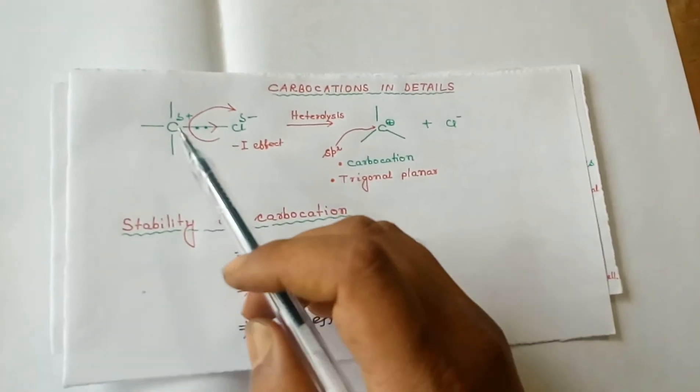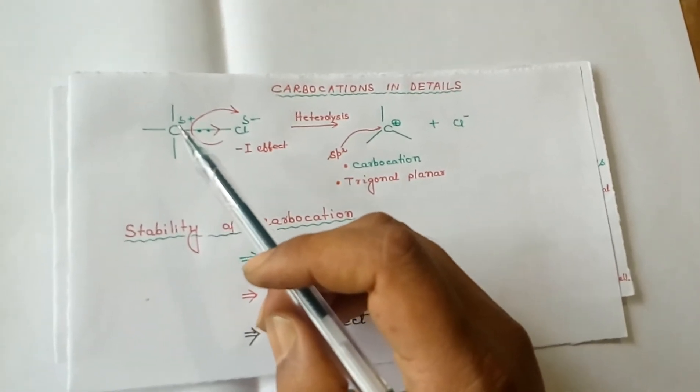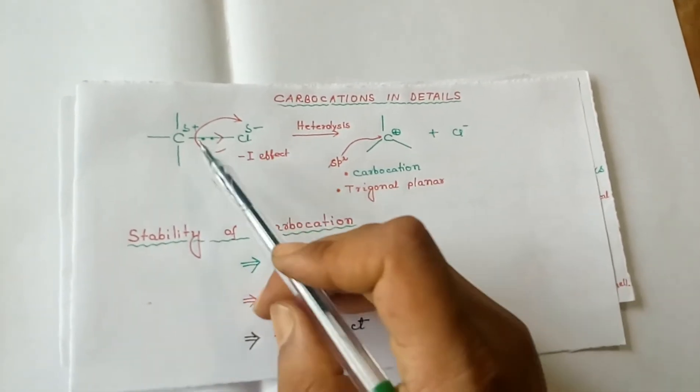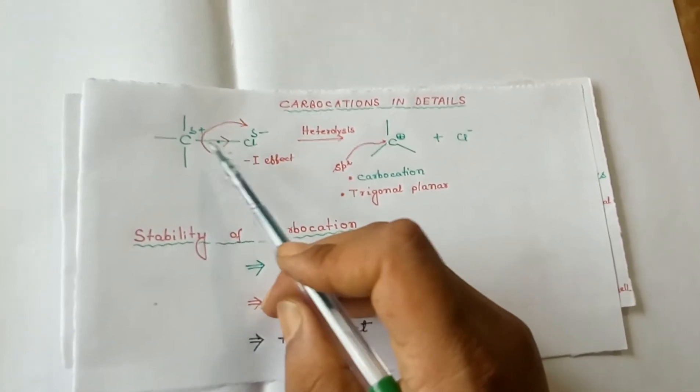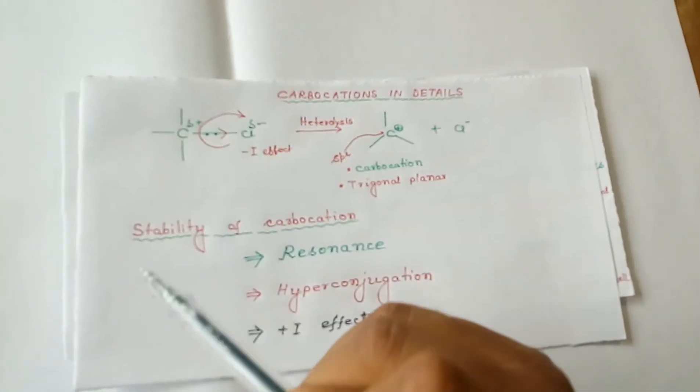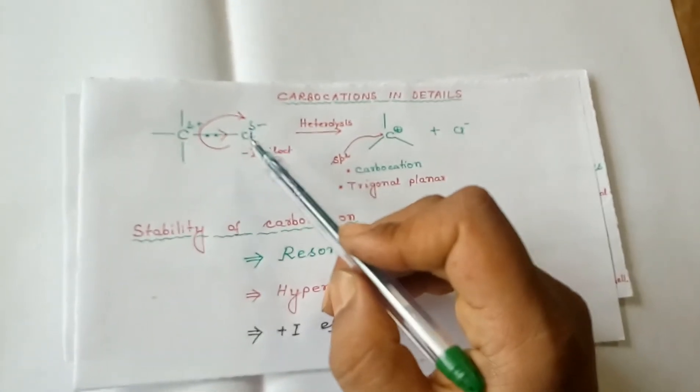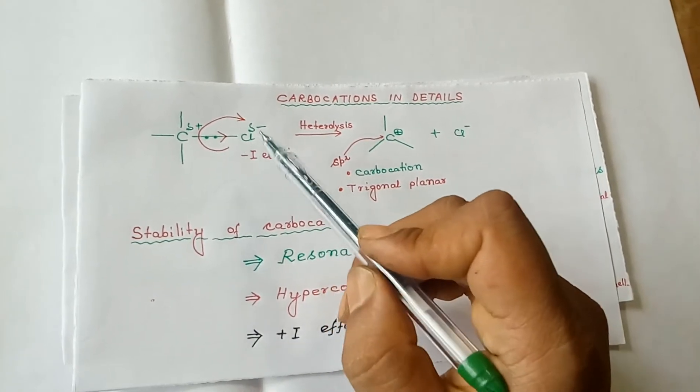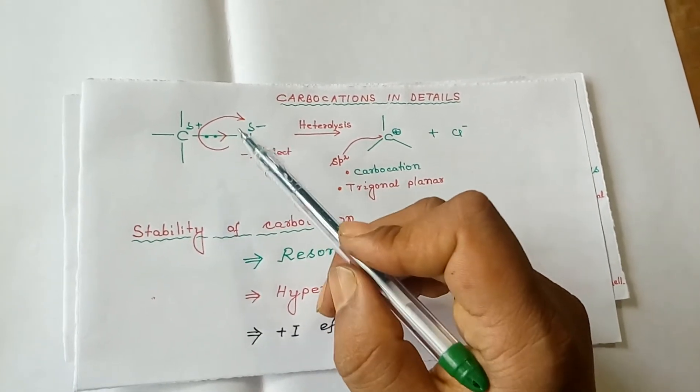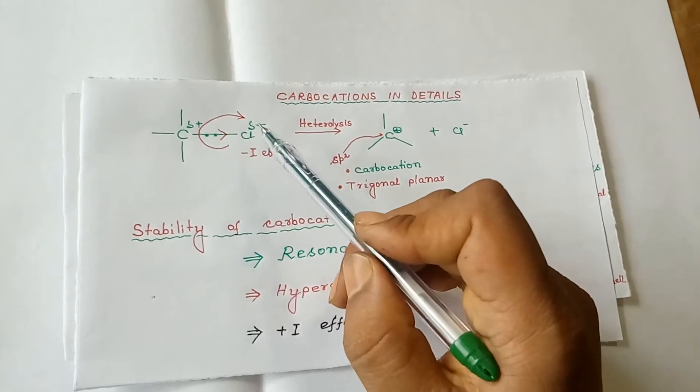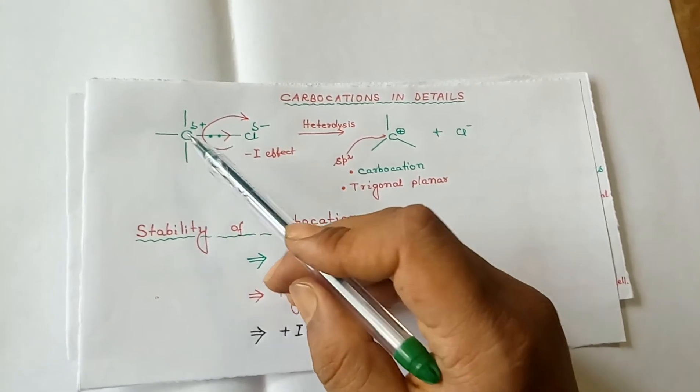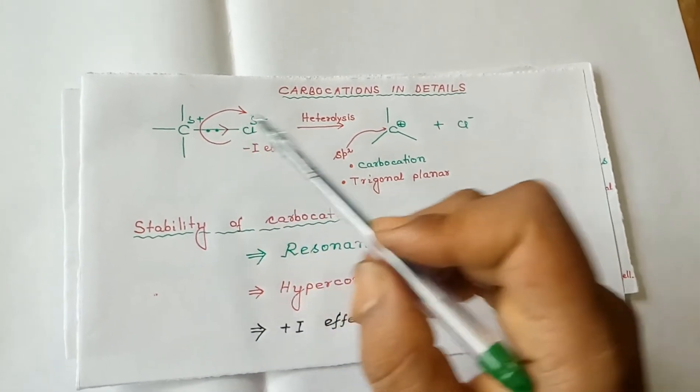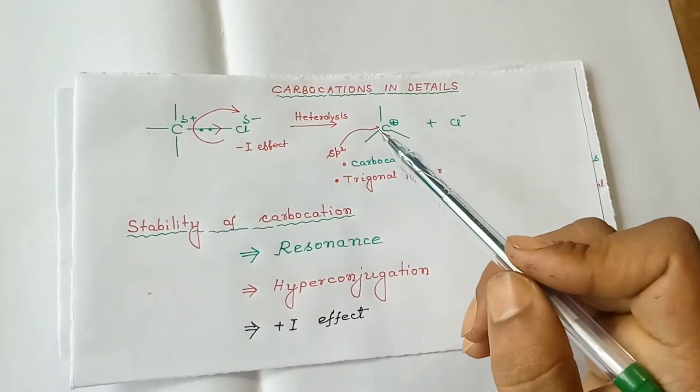Consider a molecule, alkyl chloride. In the C-Cl bond, the shared pair of electrons will reside more towards chlorine because chlorine is more electronegative. Because of the -I effect, there will be slight electron density on chlorine, making it δ- (delta negative), and carbon is losing electrons, making it δ+ (delta positive).